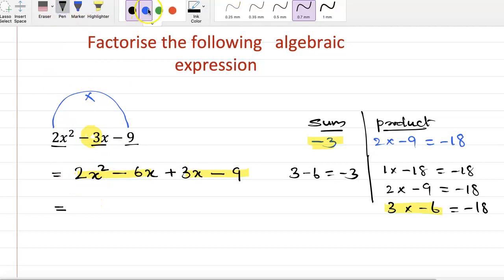So the common factor among the first 2 is 2x into x minus 3. The 3 is the common factor in the last two, so we write 3 into x minus 3. So the answer is x minus 3 into 2x plus 3.